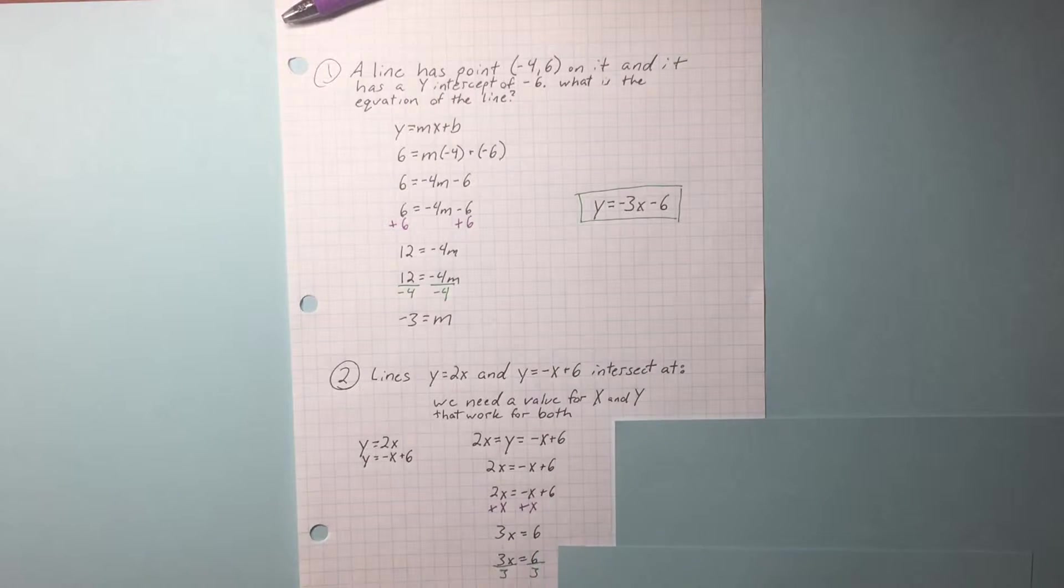3x equals 6. Divide by 3. x equals 2. We know that's the x value of the intersection. We need to know what the y value is, where they intersect.